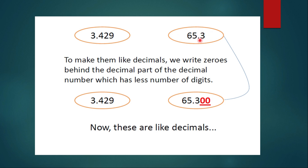We count the digits: one, two, three — three digits. So if we add two more zeros to 65.3, it will also have three digits in the decimal part. We insert two zeros, making it 65.300. Now both numbers have three digits after the decimal, so they are like decimals. We can only insert zeros, not any other digit, because inserting another digit would change the value. Zero does not affect the value at all.